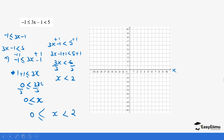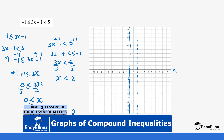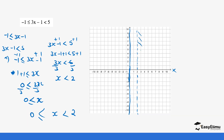On the x-axis, go to where x equals zero and draw a bold line because of the equal sign. Then go to where x equals two and draw a dotted line since there is no equal sign. Shade all values of x greater than two as unwanted, and shade all values less than zero as unwanted. Remember, two is not part of the solution. Our compound inequality is the region between zero and two.